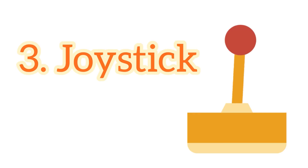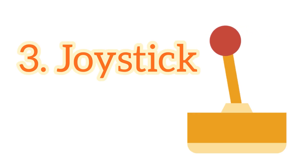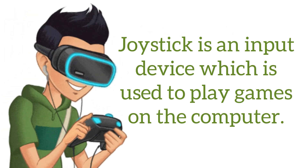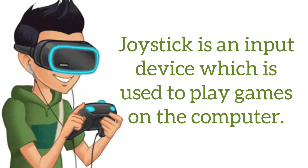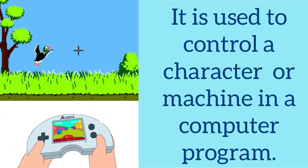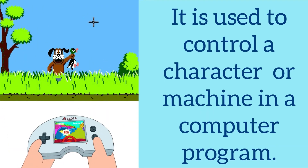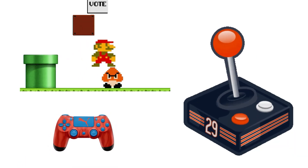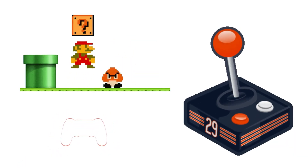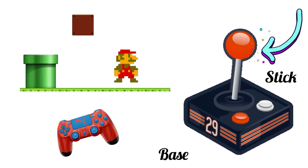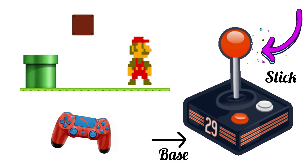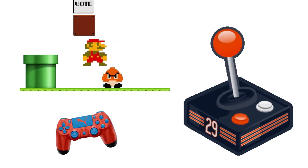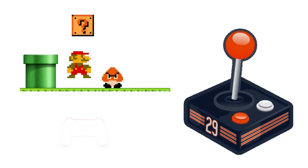Our next input device is joystick. A joystick is an input device which is used to play games on the computer. It is used to control a character or machine in a computer program, and it is commonly used to control video games. It consists of a base and a stick that can be moved in any direction to control or give commands to your character in the video game.